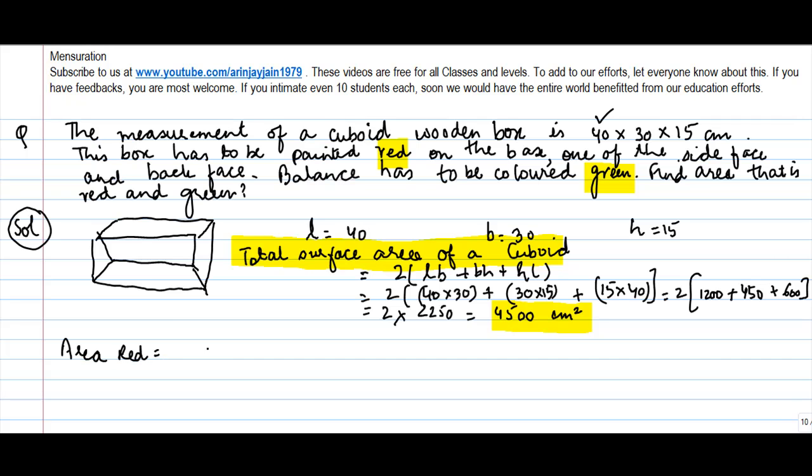Area red is equal to base area plus side area plus back face area. So, let's take it one by one. Let's take the base first. Where is the base? This is the base. So, if you see this base comprises of the length of the cuboid and the breadth. So, the base area is equal to length into breadth, which is equal to 40 into 30.